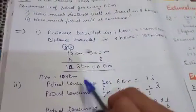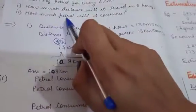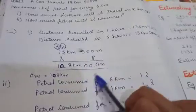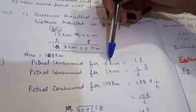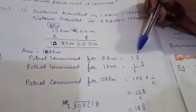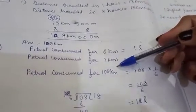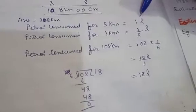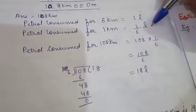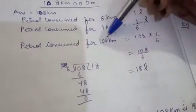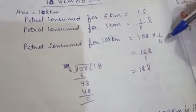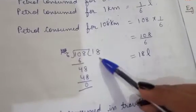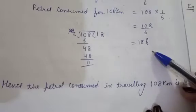For the second part, 1 liter of petrol is used for 6 kilometers. First, find petrol for 1 kilometer: since we go from larger to smaller, we divide — petrol for 1 kilometer is 1/6 liter. Now for 108 kilometers: 108 × (1/6) = 108 ÷ 6 = 18. So the petrol consumed for traveling 108 kilometers in 8 hours is 18 liters.